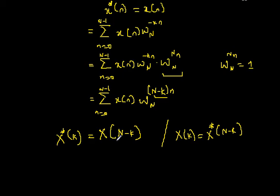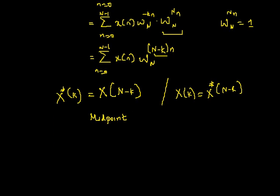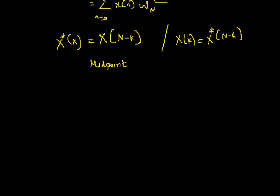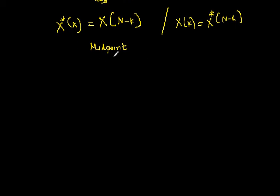What is the significance of this? The equation conveys the message that the DFT of a real sequence possesses conjugate symmetry about the midpoint. The midpoint of the sequence X(k) is at k equal to N/2, which I call the folding index.